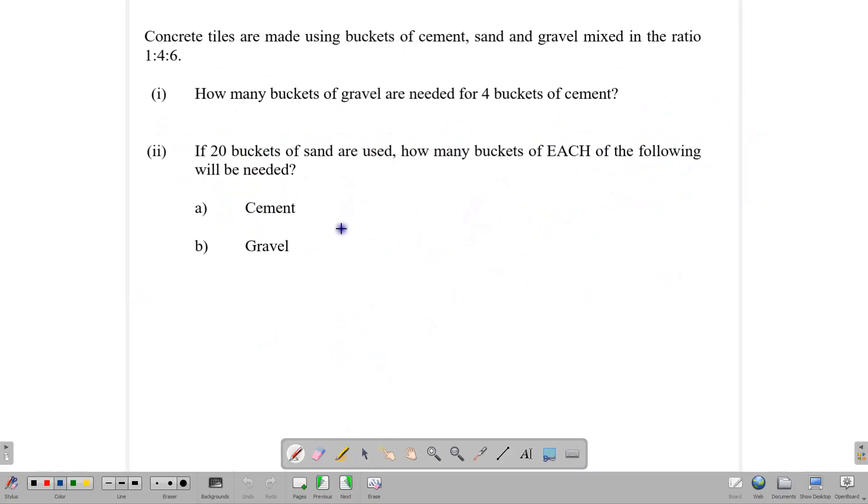Let's try it again with this question. Concrete tiles are made using buckets of cement, sand, and gravel, and this is the ratio: 1 to 4 to 6. So we have cement, sand, and gravel. Let's set up our model: cement, sand, and gravel. Now we know the ratio is 1, 4, and 6.